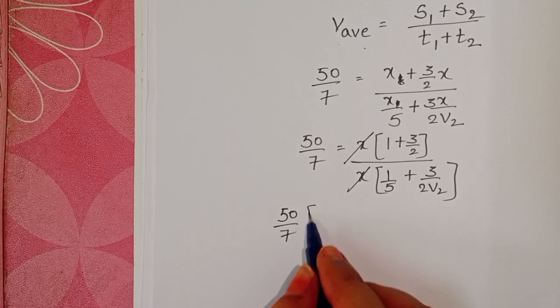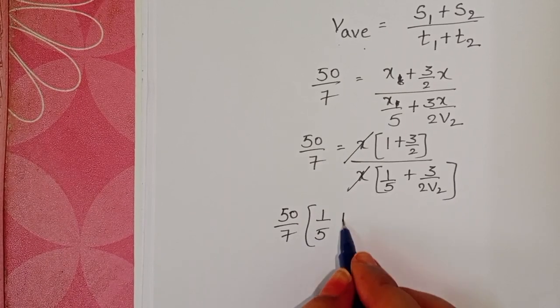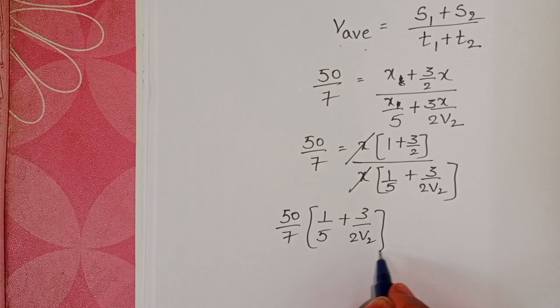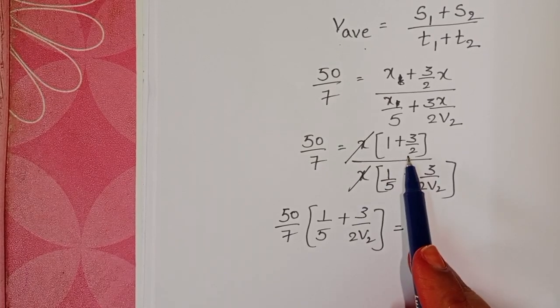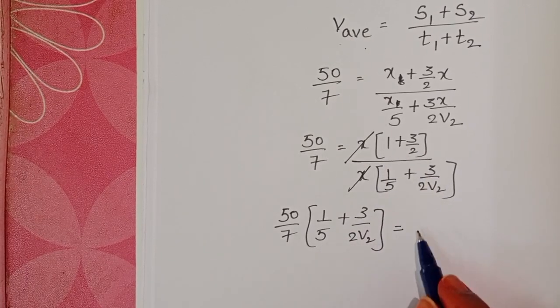50 by 7 into 1 by 5 plus 3 by 2v2 equals... Here LCM is 2. 2 plus 3 is 5, so 5 by 2.